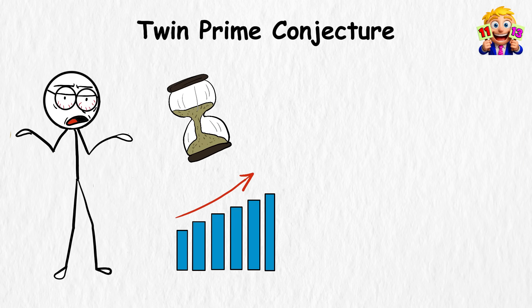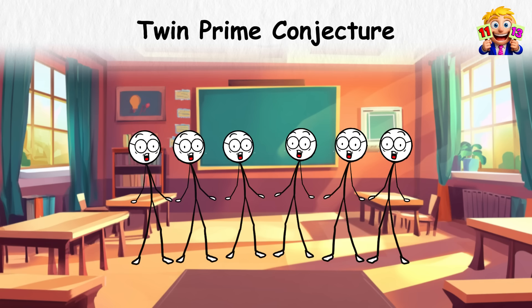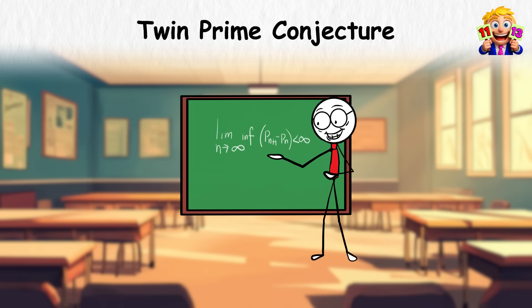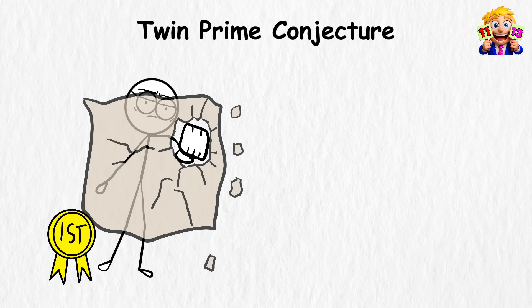For centuries, nobody could get real progress on this. Then in 2013, a quiet, little-known mathematician named Yiteng Zhang stunned everyone. He showed that there are infinitely many prime numbers that sit fairly close together, no more than 70 million apart. 70 million sounds big, but it was the first serious breakthrough in hundreds of years.